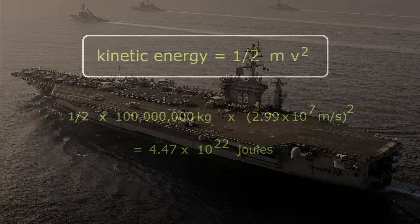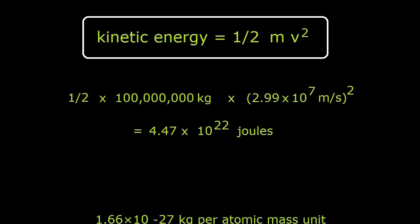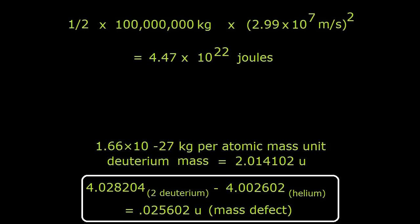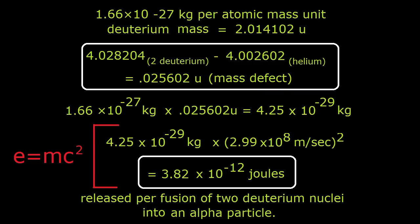The kinetic energy of 100,000 metric tons moving at one-tenth light velocity is 4.47 times 10 to the 22nd joules. The energy output from the ideal fusion of two deuterium nuclei into an alpha particle is 3.82 times 10 to the negative 12 joules.